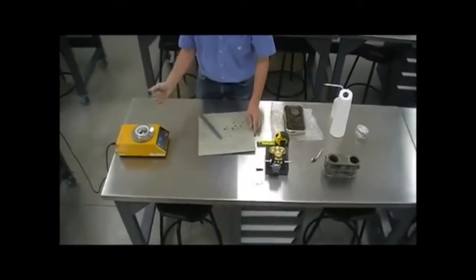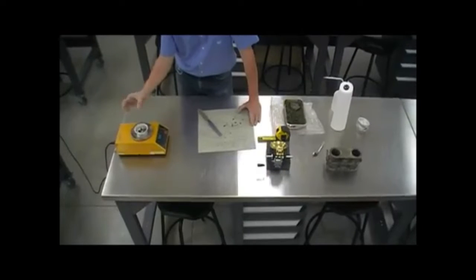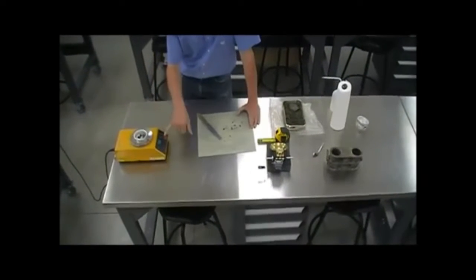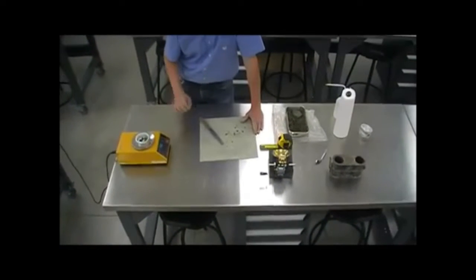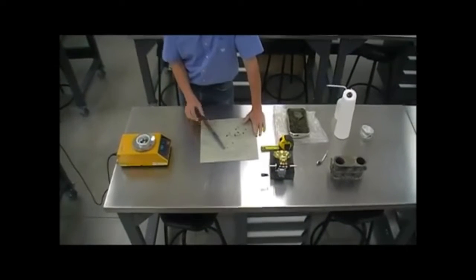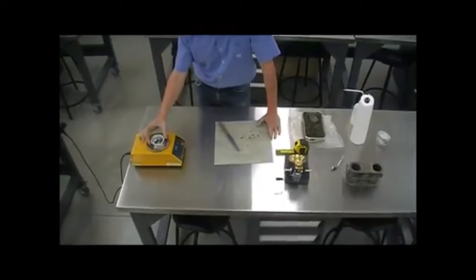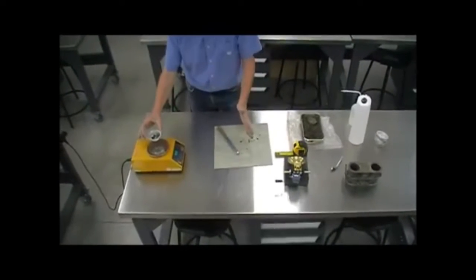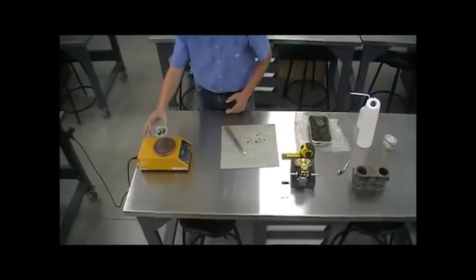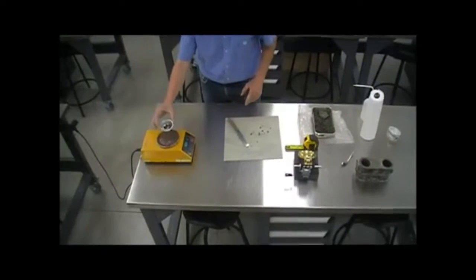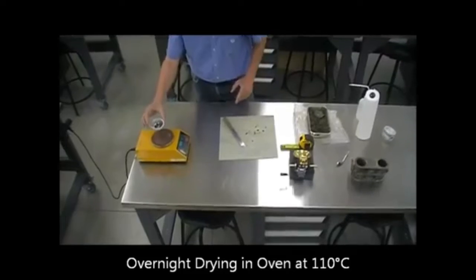This would be the wet soil plus dish having a weight that is recorded. The next step, normally you may have enough sample to do a couple of these determinations so that you can average them. And this goes into the oven.